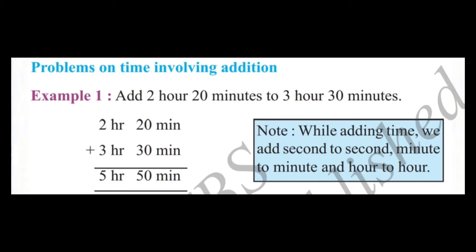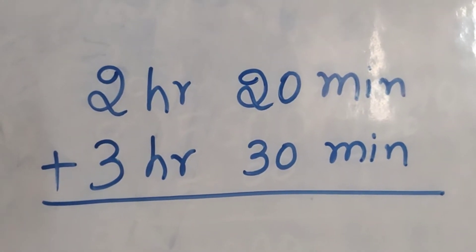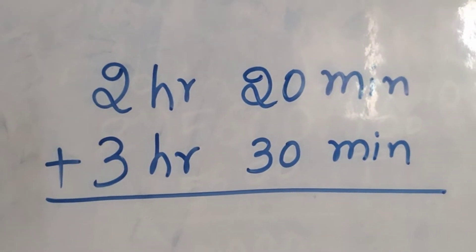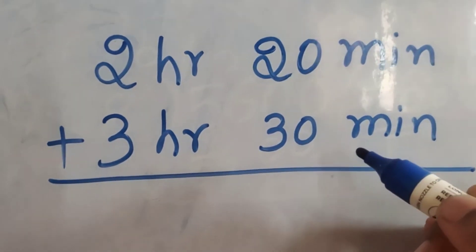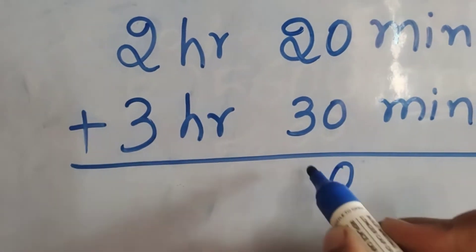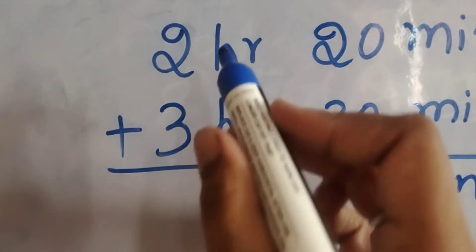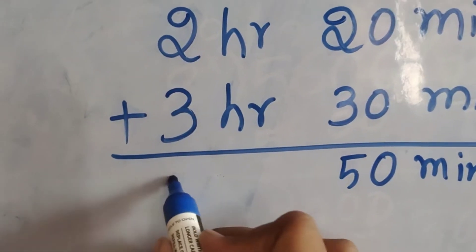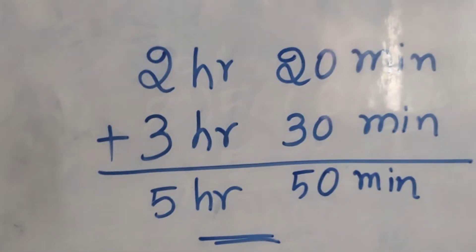Example 1: Add 2 hours 20 minutes to 3 hours 30 minutes. To add, we add hours with hours and minutes with minutes. 0 plus 0 is 0, 2 plus 3 is 5 — so 50 minutes. Then 2 plus 3 is 5 hours. The answer is 5 hours 50 minutes.